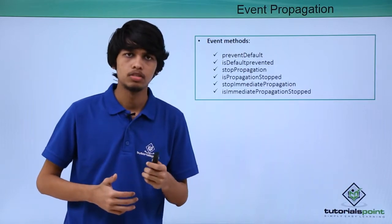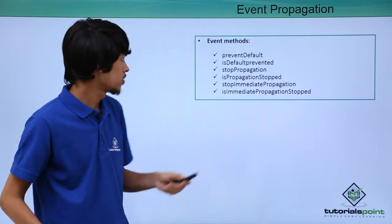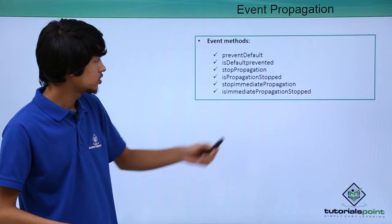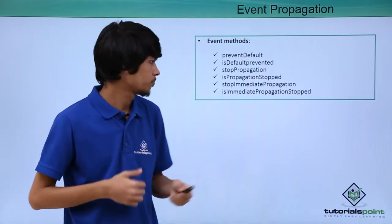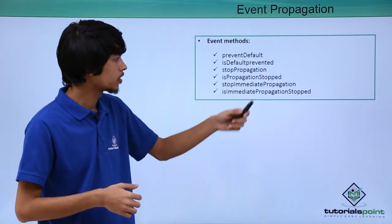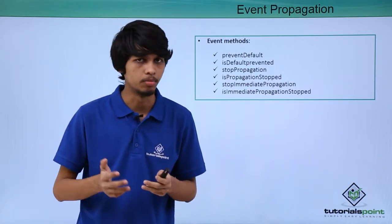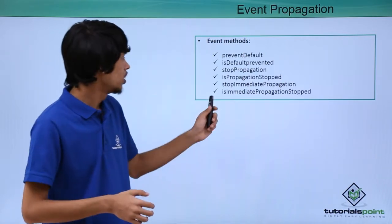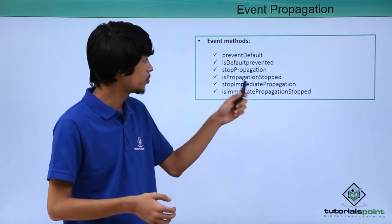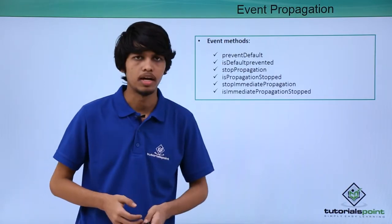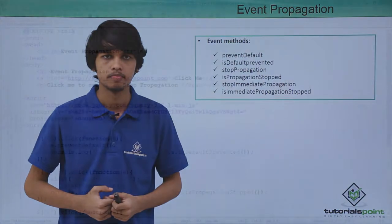Next is stopPropagation — the stopPropagation method is used to prevent an event from bubbling to its parents. isPropagationStopped checks whether stopPropagation was fired or not. Similarly, stopImmediatePropagation is used to cancel all other event handler methods. isImmediatePropagationStopped checks if stopImmediatePropagation was fired or not. Let's see all of this in practice.